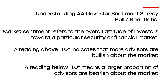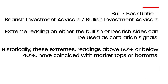The Bull-Bear Ratio is the relationship between those advisors that are bullish to those advisors that are bearish. A reading above 1 indicates that more advisors are bullish about the market, where bullish refers to the investor's sentiment that believes the stock market will soon go up. A reading below 1 means a larger portion of advisors are bearish and think the market will pull back in the future.